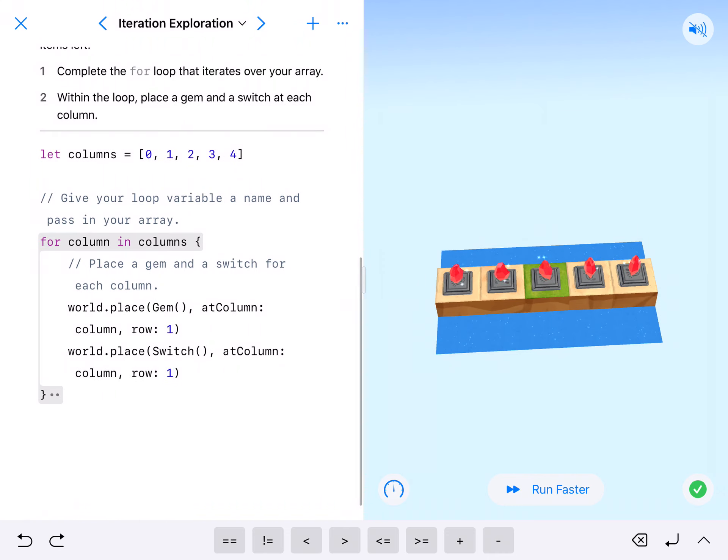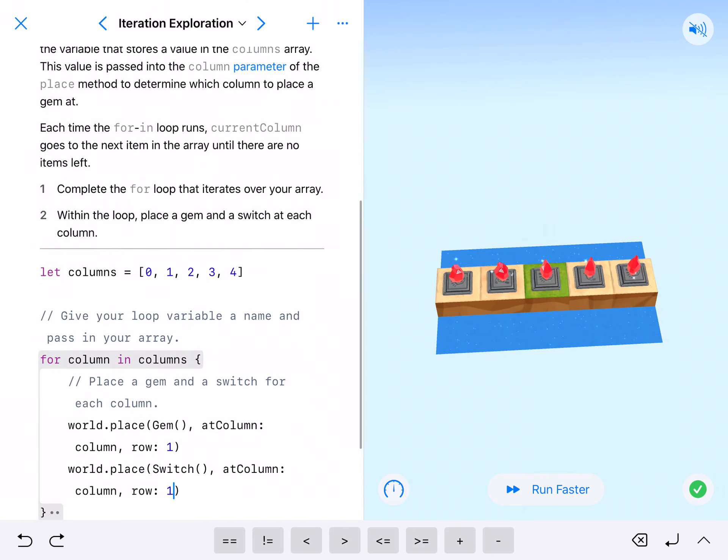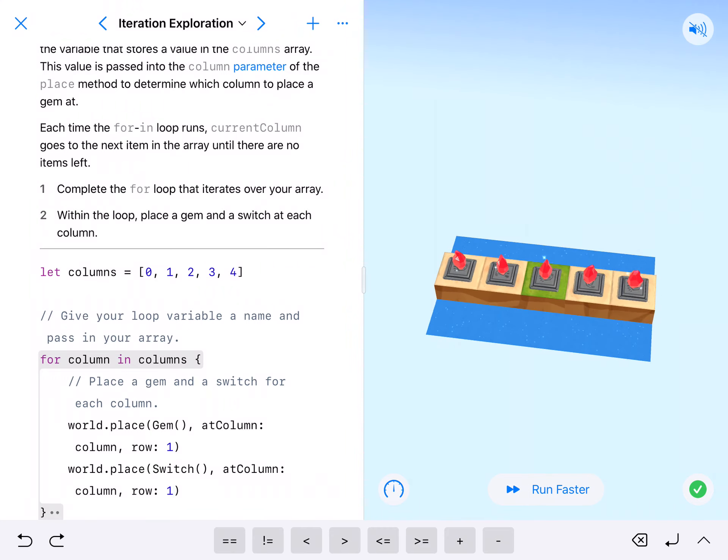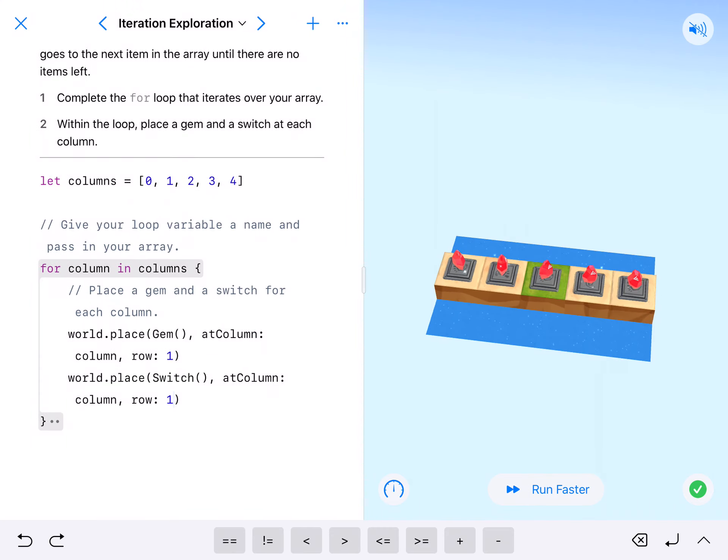Anyway, now we're iterating over an array of columns as opposed to rows. Remember, columns are where the position is left and right, and rows are where the position is bottom to top. I'll see you on the next one.